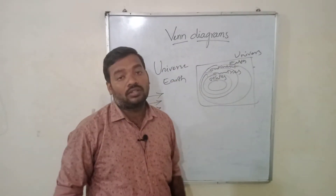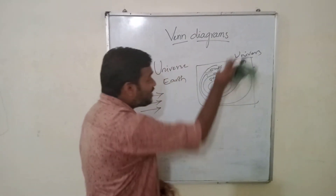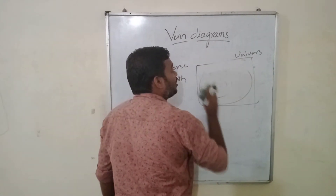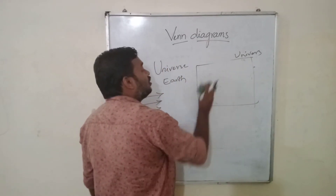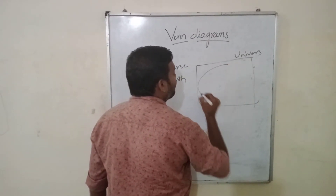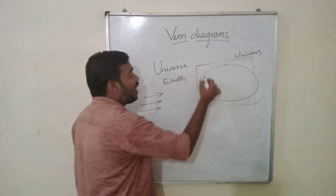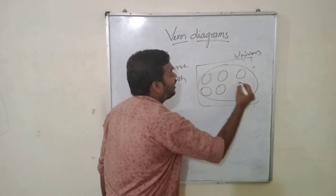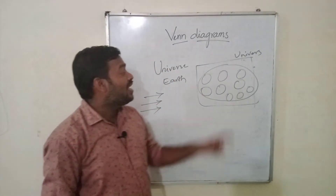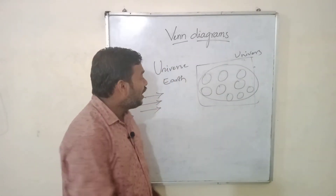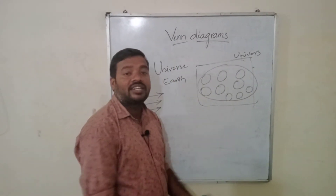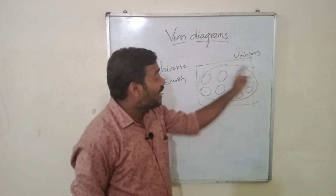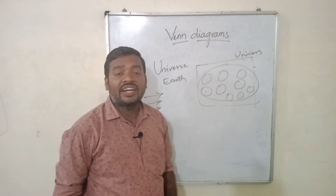That means if you don't have overlap, these are subsets — that is the first case, the subset case. If these are not subsets, let us say planets: in the universe we have planets, and in planets we have separate planets — Earth, Mars, Mercury, Venus, Jupiter, and so on. We have nine other planets, representing nine different sets. In Earth we have separate countries and oceans, and we keep going to those sets. Like that, we are representing a group of elements in the form of Venn diagrams.